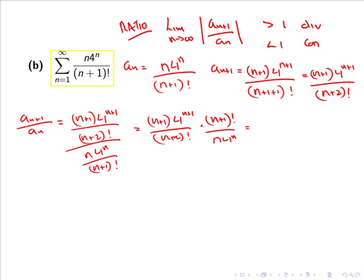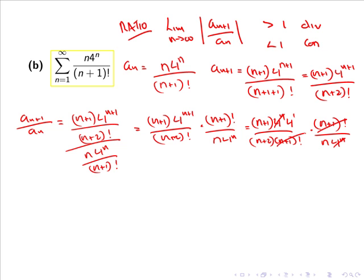Now 4 to the n+1 is simply 4 to the n multiplied by 4, and (n+2) factorial is simply (n+2) multiplied by (n+1) factorial. We can now cancel 4 to the n — the exponentials — and we can cancel the (n+1) factorial. So we have 4(n+1) all divided by n(n+2), which simplifies to 4n+4 all over n² + 2n.